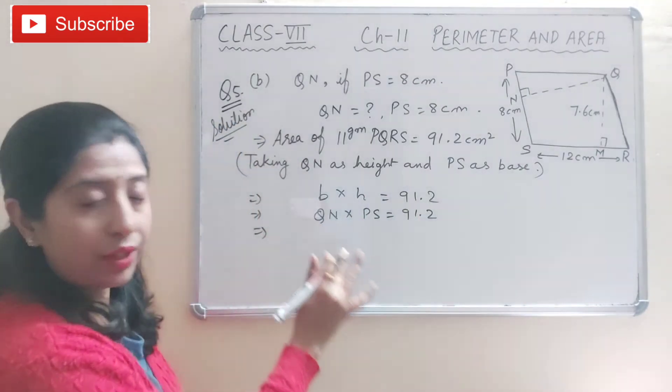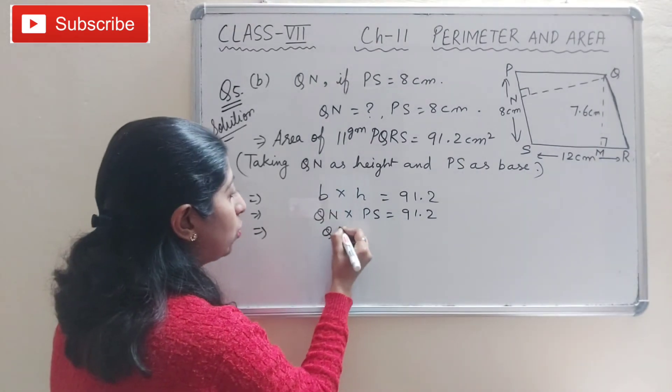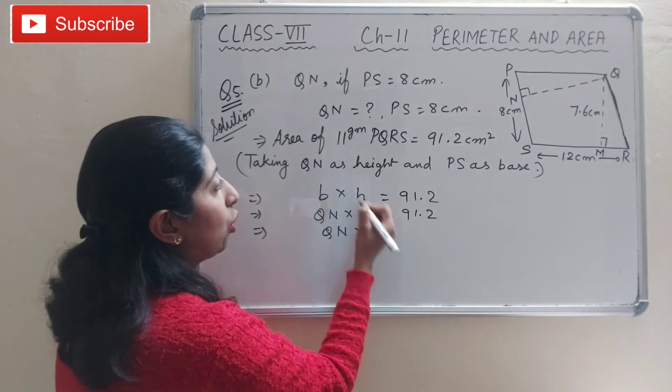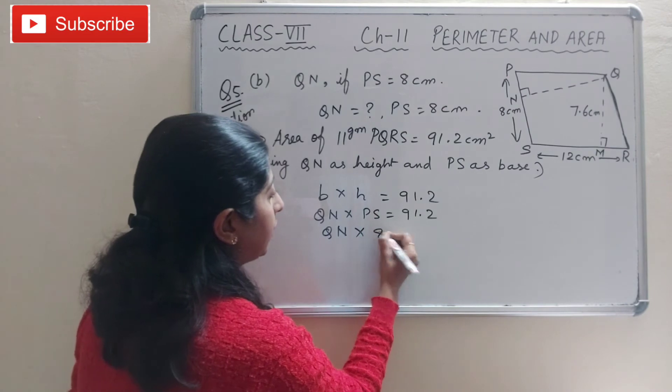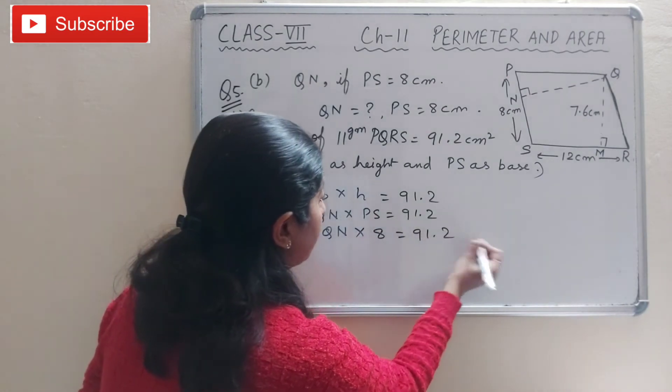Now we will put QN and PS values. QN we don't know, so QN will remain as QN. And at PS's place we'll write 8. So QN times 8 equals 91.2.